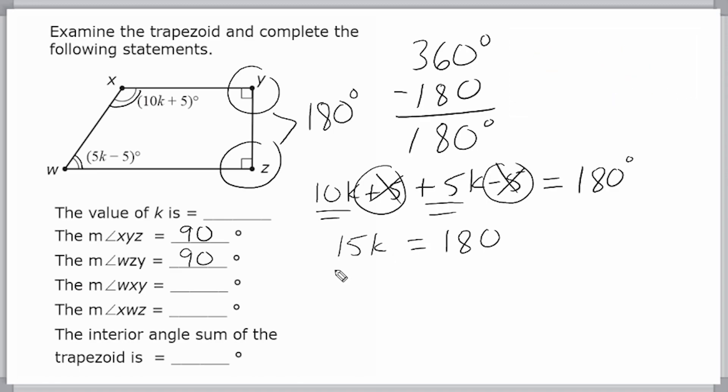Now, to solve for k, we have to divide the coefficient by itself. We have to divide the other side by 15 as well. That gives us k is equal to whatever 180 divided by 15 is. So we just go to the side and divide that by 15.